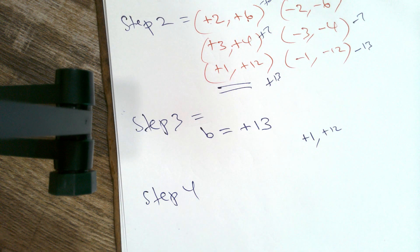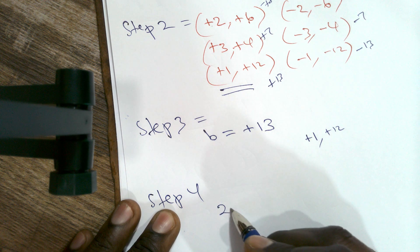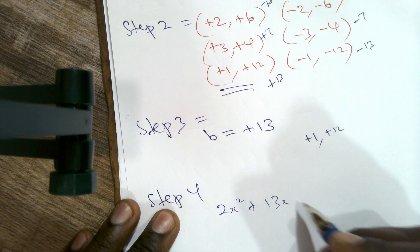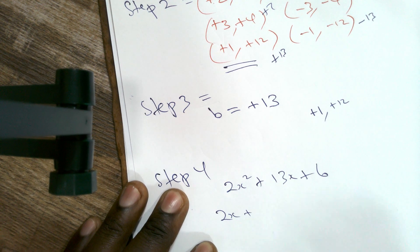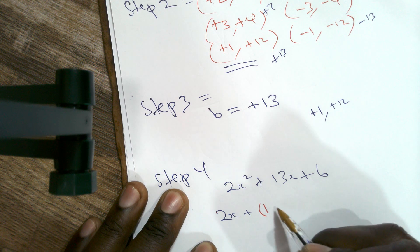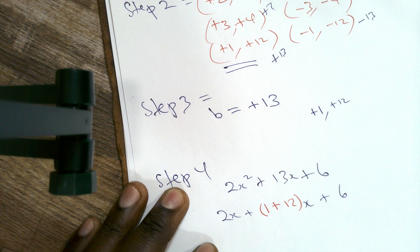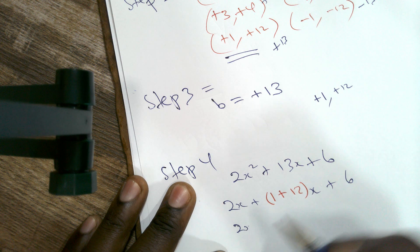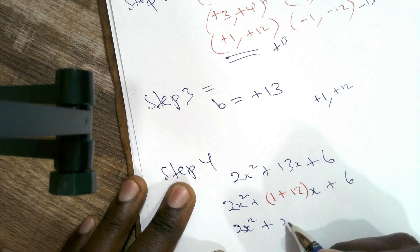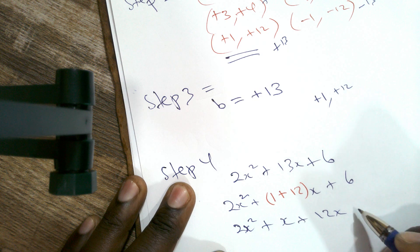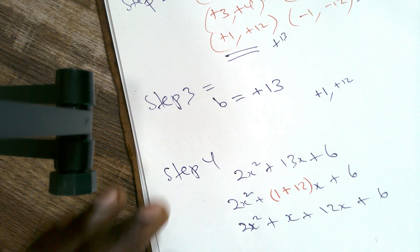Step four: replace b in the equation with the factor pairs. The original expression is 2x² plus 13x plus 6. Replacing 13x with the factor pair gives: 2x² plus 1x plus 12x plus 6. Expanding that out: 2x² plus x plus 12x plus 6.